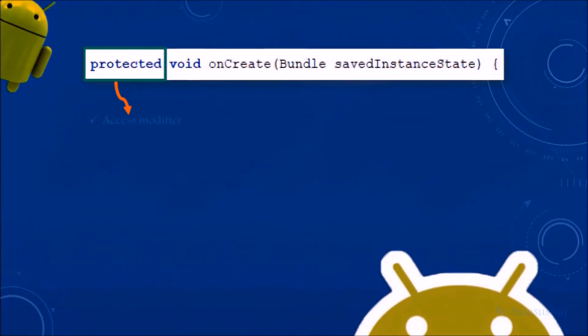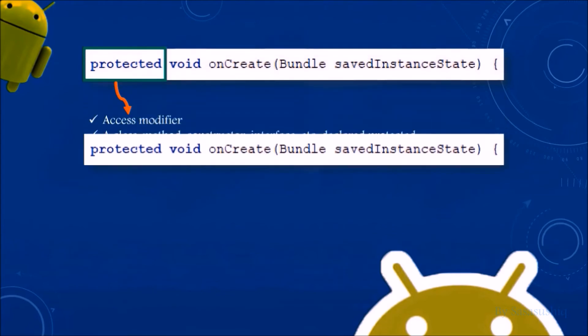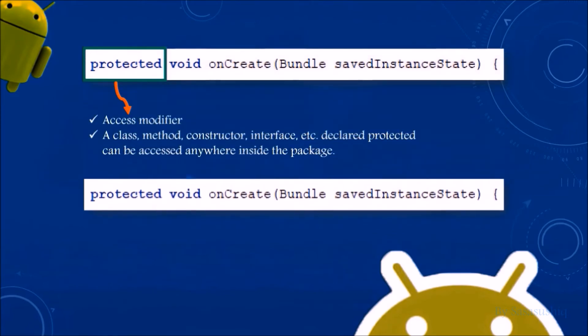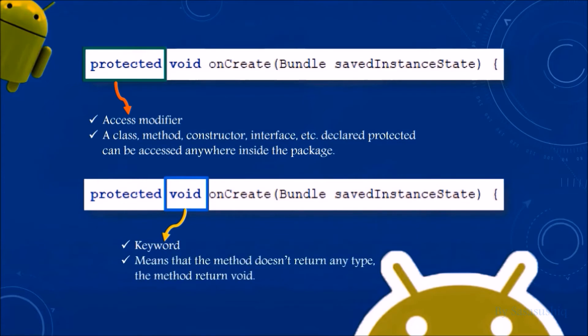It is an access modifier. A class, method, constructor, interface, etc. declared protected can be accessed anywhere inside the package. Void is a keyword — it means that the method doesn't return any type.